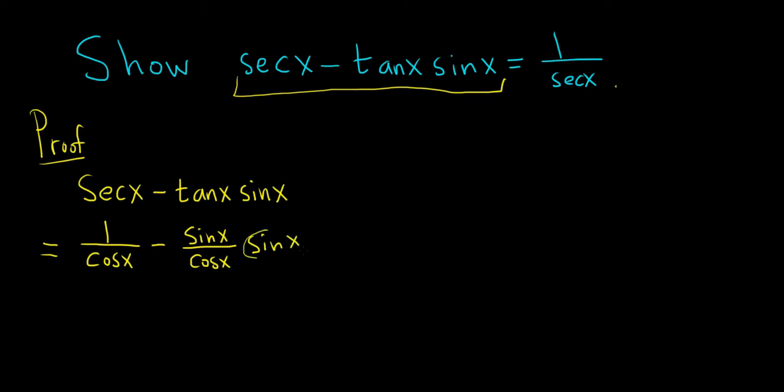Now we can distribute this. This gives us 1 over cosine minus sine times sine, which is sine squared x over cosine x.